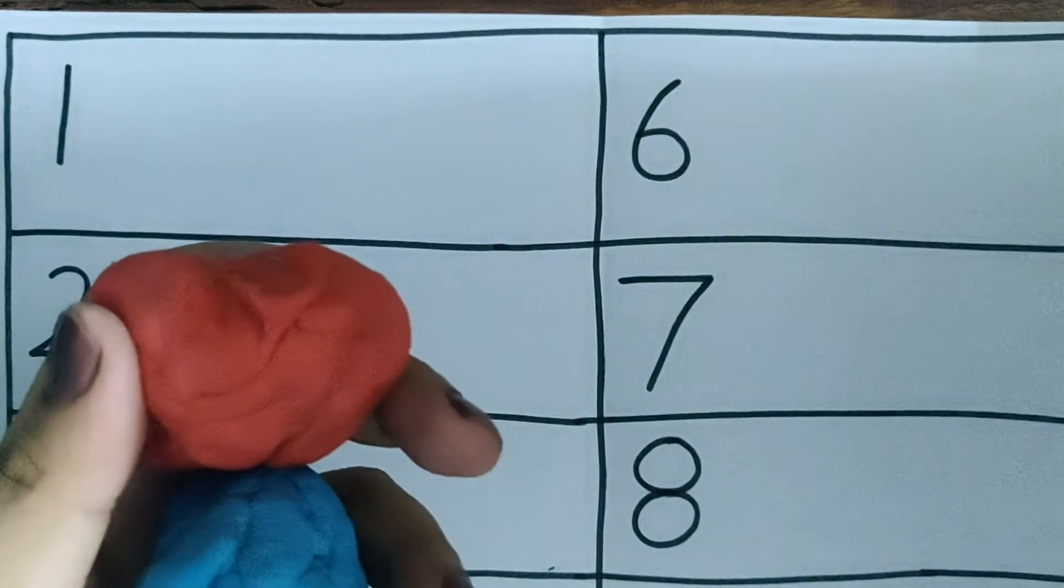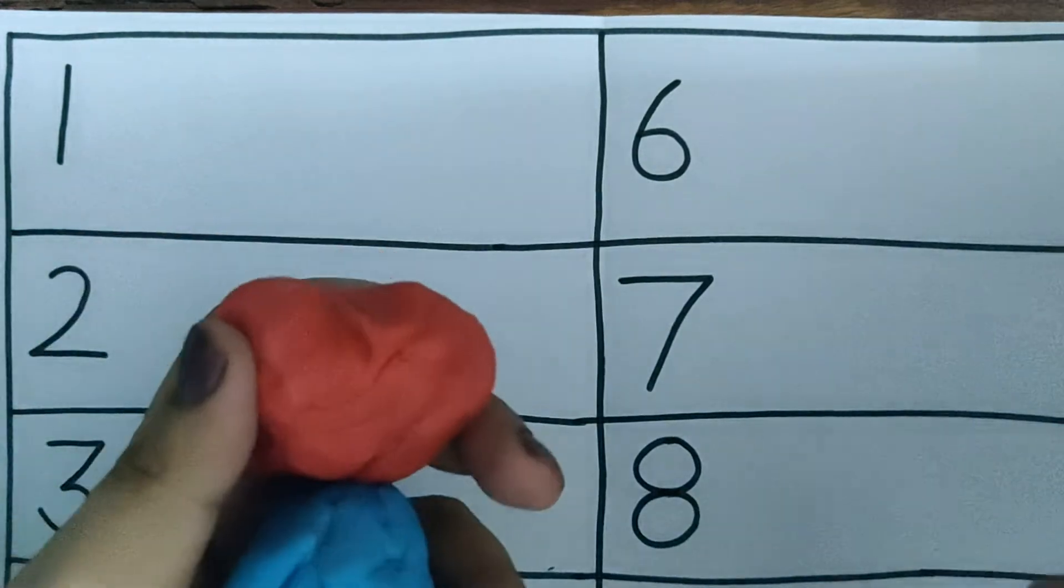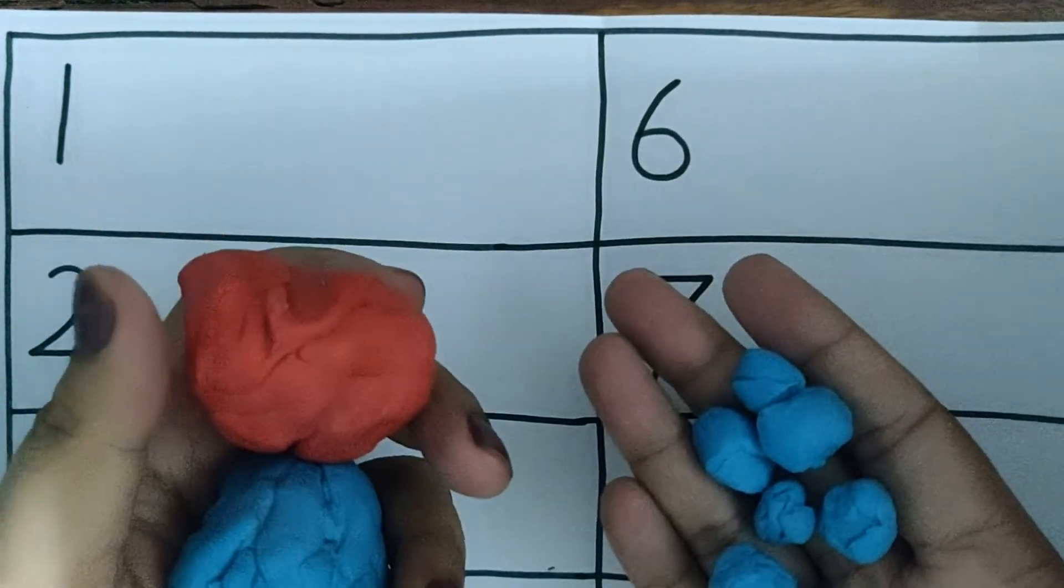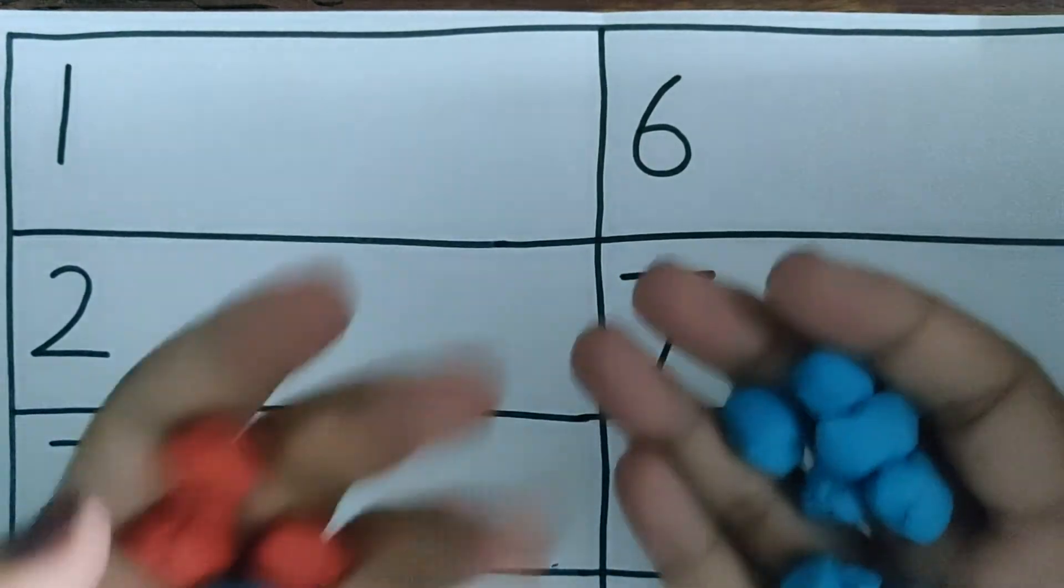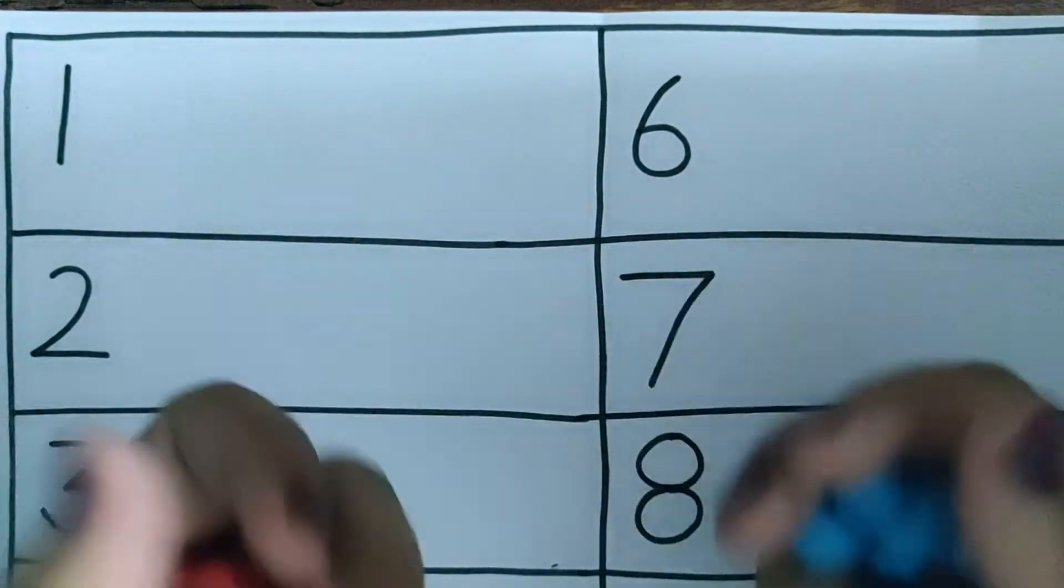What we have done is made our play-doh into small balls. And to make it more fun for them, we have made many different colors of balls.